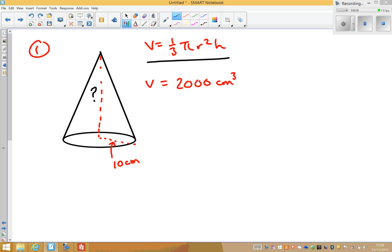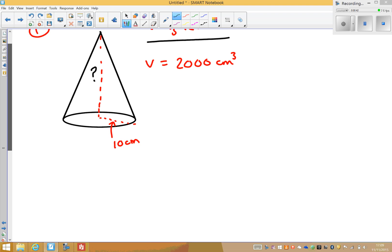So my suggestion with a question like this is that you start with the formula. So again, the volume is a third times pi times the radius squared times by the height.